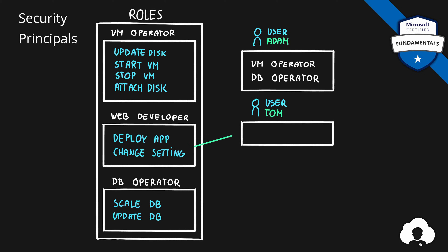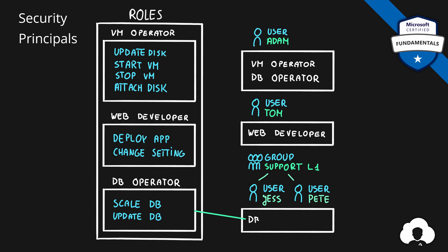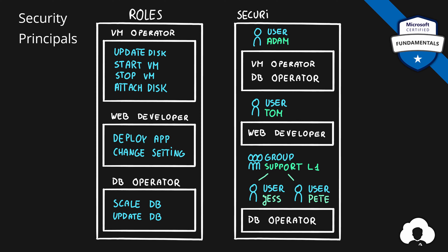You can also assign Tom a web developer role if he's developing web applications, or assign a role to a group. In this case, a DB operator role will be assigned to the support L1 group, so both Jess and Pete who are part of this group would get that role assigned as well. It is quite important to understand that assigning a role to a group will affect all of the users within that group.